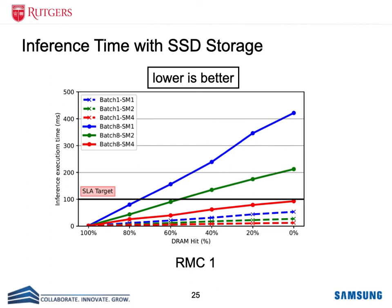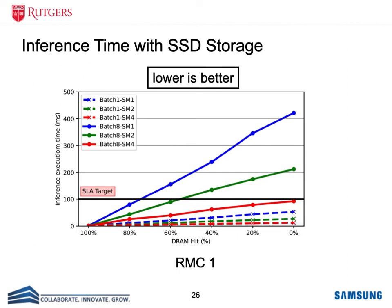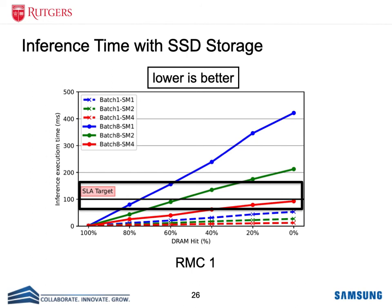We also evaluated the end-to-end inference execution time when embedding tables are stored on SSD. To evaluate our caching technique, we show execution time for various cache hit rates: 0% means none of the accesses hit in DRAM, whereas 100% means all accesses hit in the FPGA DRAM. The figure also shows the target latency requirement for this particular model. For smaller batch sizes, the SSD system with SmartRec can meet the target latency. However, for large batch sizes, the latency is met only when there is enough data locality, as shown in the figure.